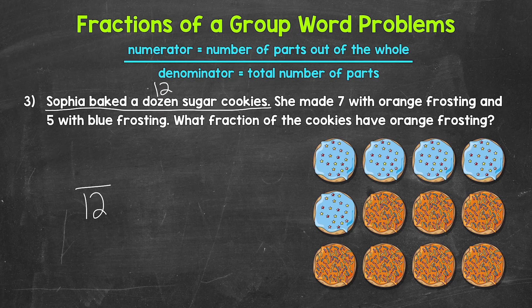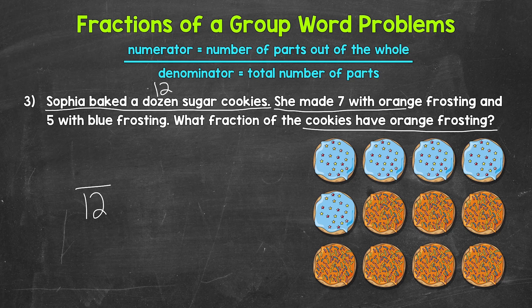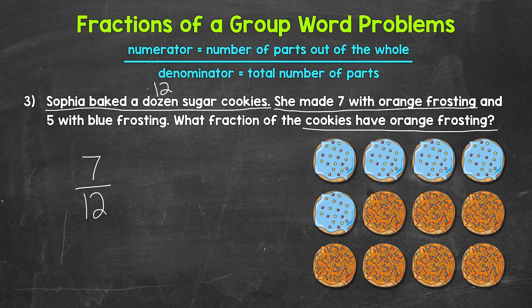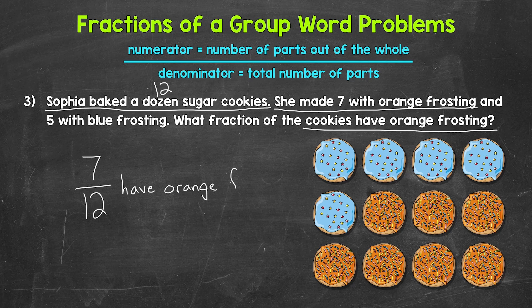And now we need the numerator. We are looking for the cookies that have orange frosting. So how many cookies were made with orange frosting? Seven were made with orange frosting. So seven is our numerator. Seven out of the 12 cookies have orange frosting. So our fraction here, seven-twelfths. Seven-twelfths of the cookies have orange frosting.